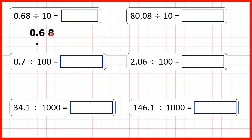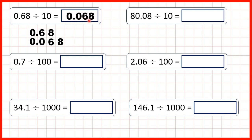So we copy down this 8 one square to the right, do the same with this 6 and with this 0. We get 0.68 in the new position, but we know the digit before the decimal point is our ones digit and we can never have an empty ones column, so we write a zero there. That gives us our answer: 0.068.